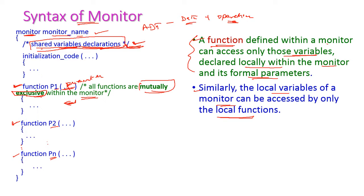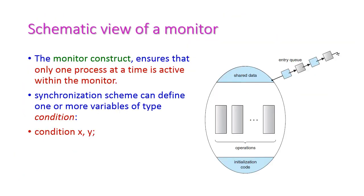This is the syntax for monitor. Next let us see the semantic view of monitor. The monitor construct ensures only one process at a time is active within the monitor. Every monitor contains shared data, a set of operations, and initialization code — that is, initializing all the data. There are three sections in a monitor: first, shared data; second, set of operations; third, initialization code.